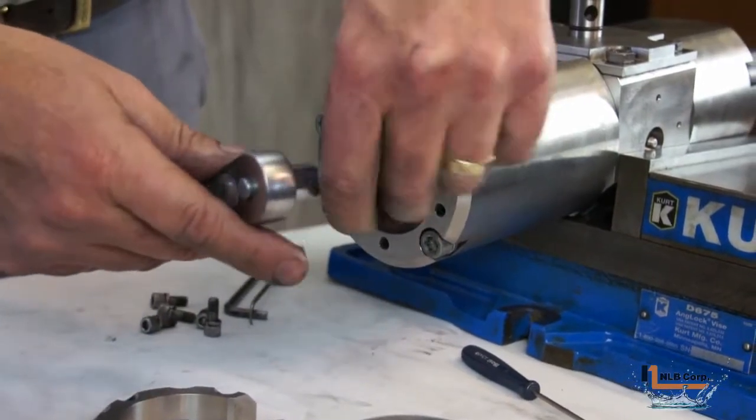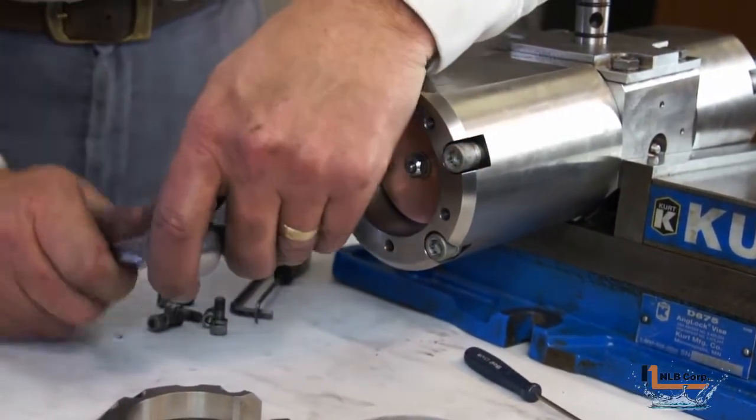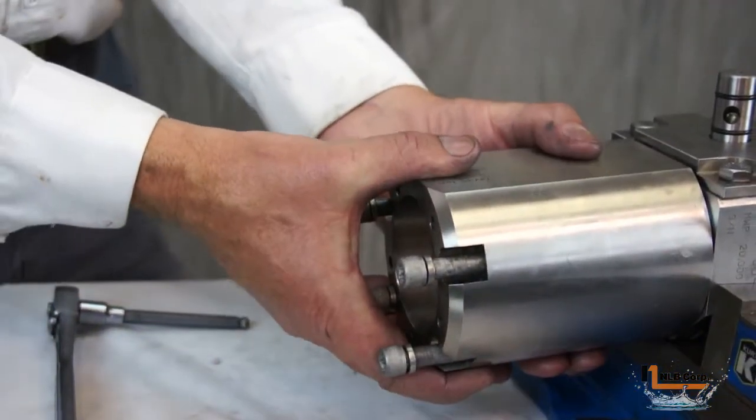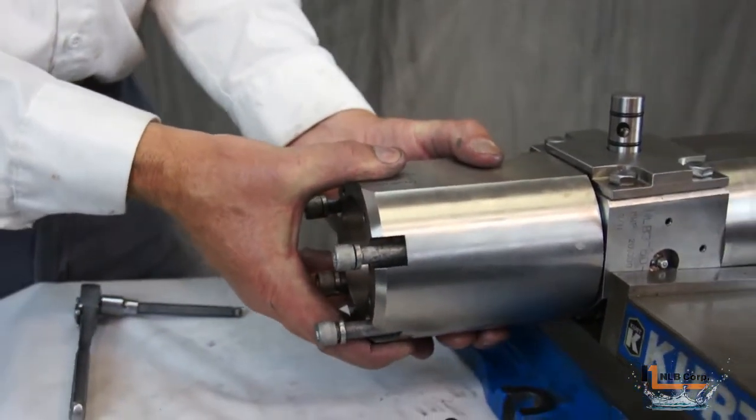To remove the housing, loosen the four fasteners and rock the housing gently until it separates from the hub.